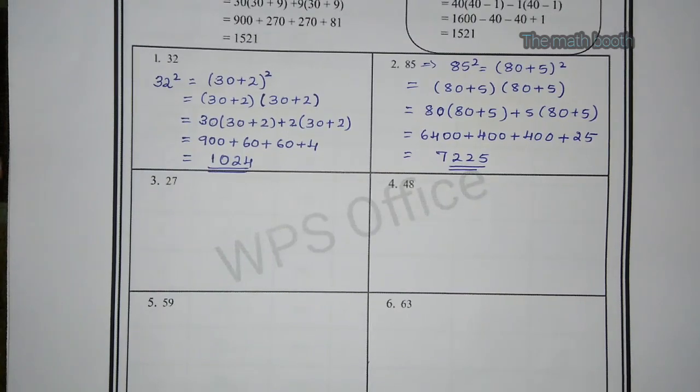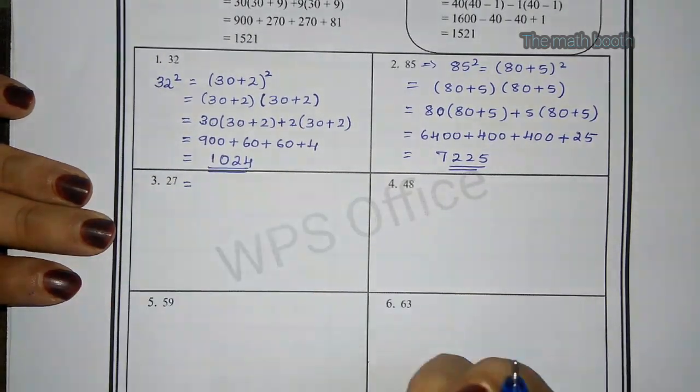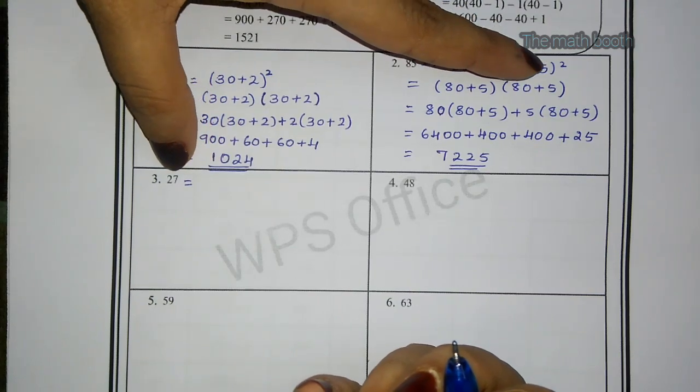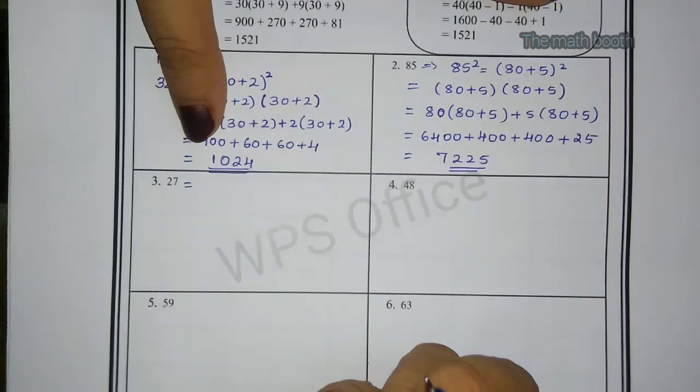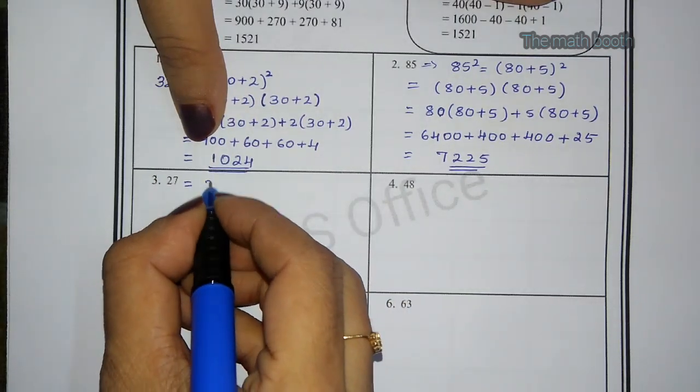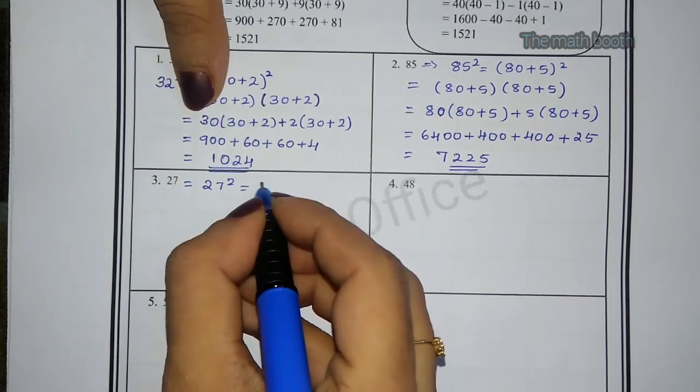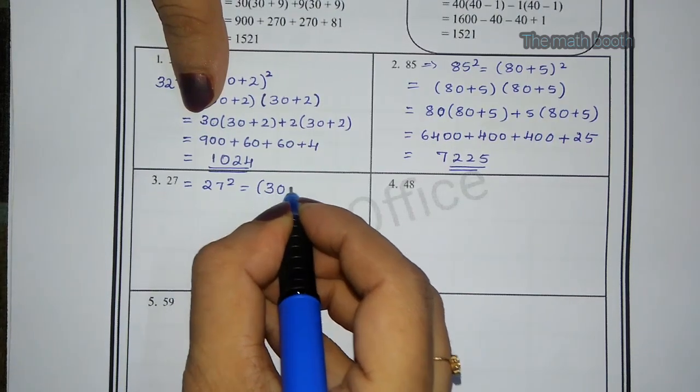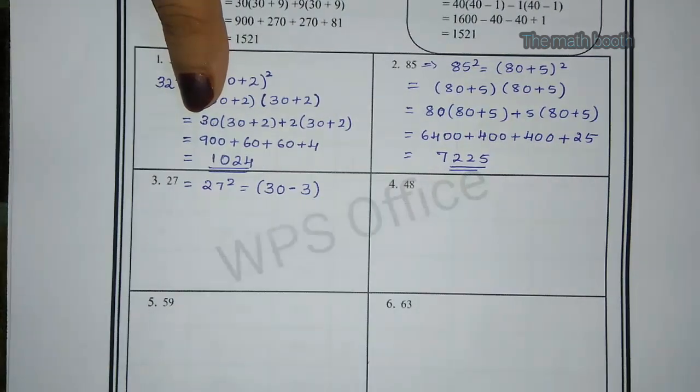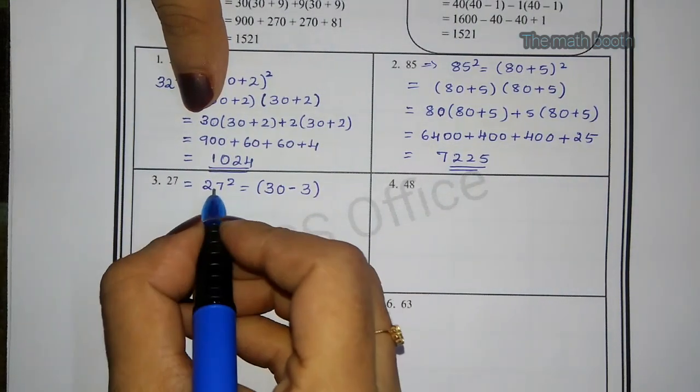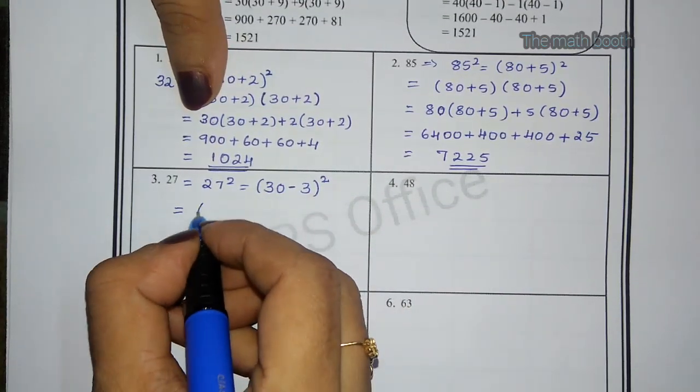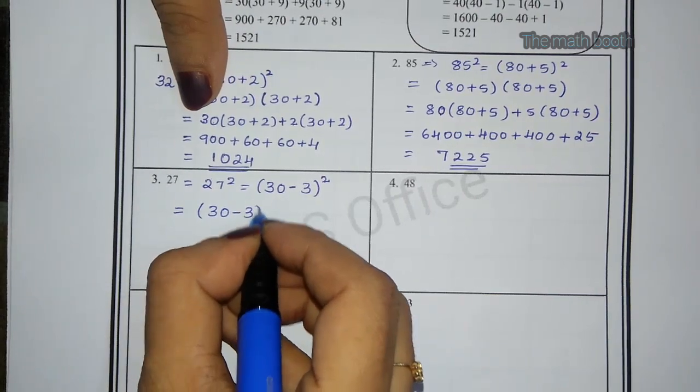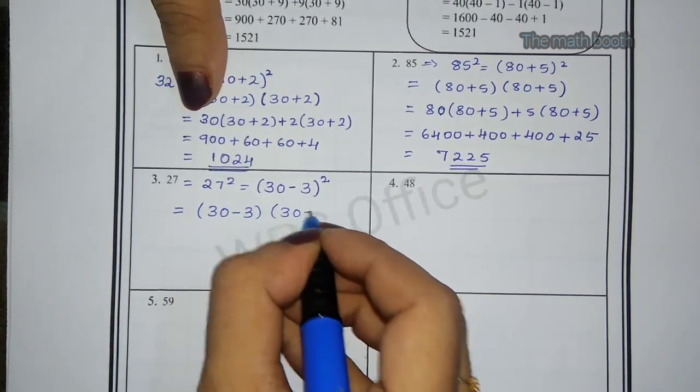Let us see what they have given here. 27. Same way we have to do. But 20 plus 7, instead of we can do 30 minus 3. Because we know 27 square, what we get? If we do 30 minus 3 we get 27. So (30 - 3) square. What we will write now? 2 times (30 - 3)(30 - 3).